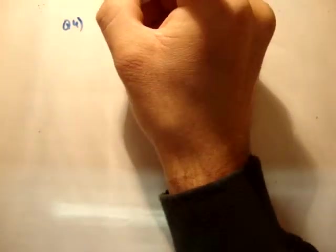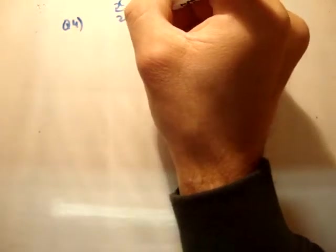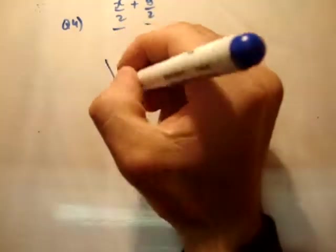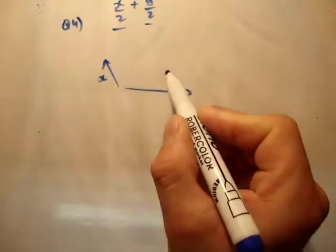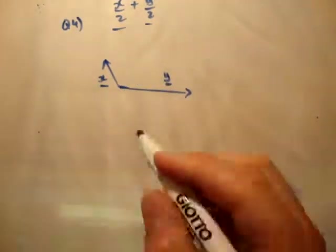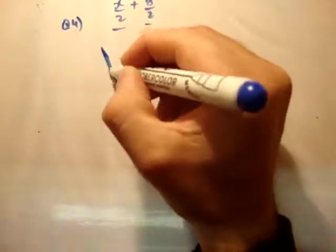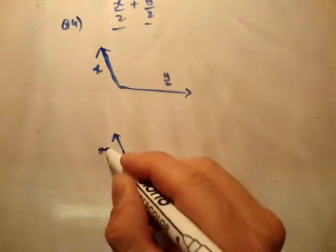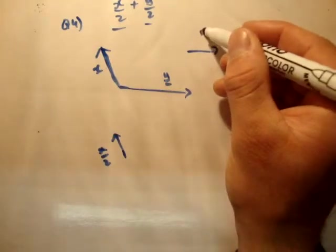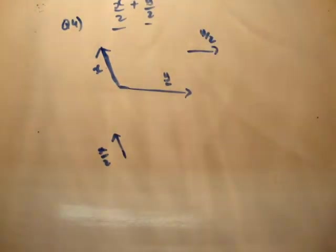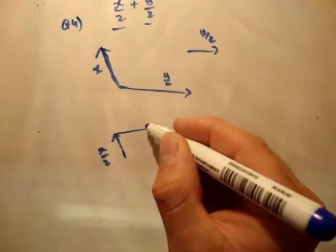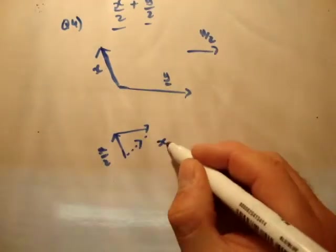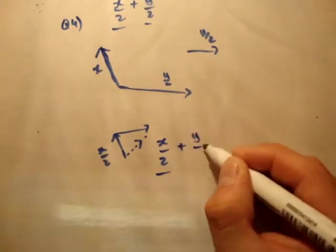Question 4: construct the vector X over 2 plus Y over 2, where X and Y are given. I'm going to extend X to make drawing easier. X over 2 would be half of that. Y over 2 might be this. Therefore, X over 2 plus Y over 2 — put the tail of the second at the head of the first and draw your resultant vector. That dotted one is X over 2 plus Y over 2.